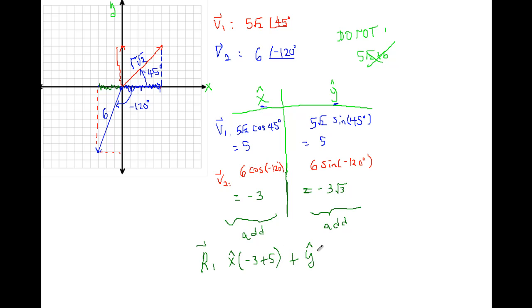And the y components, I will have 5 added to minus 3 radical 3. So for my r1, I have x, that's 2 units along x-axis. And y, I have 5 minus 3 radical 3.